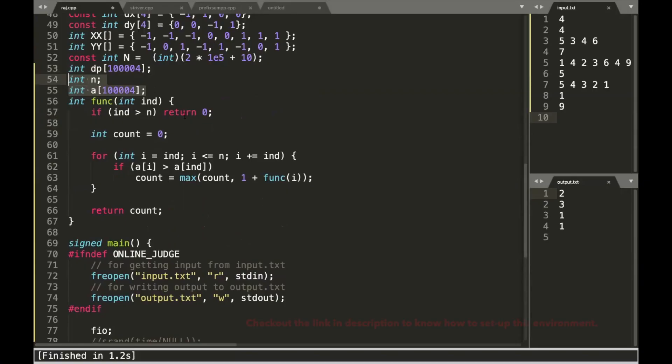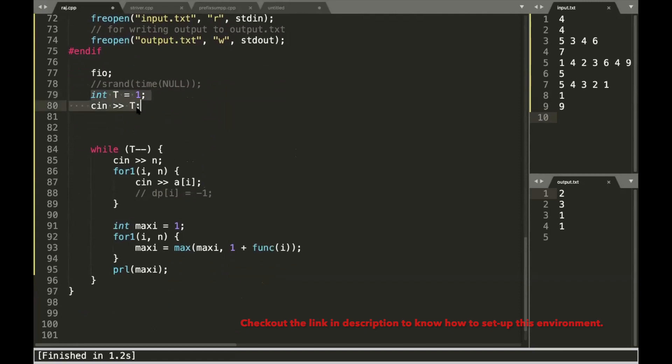So initially I've taken the n and a globally so that it's accessible to every other function part. For the moment, do not concentrate on the DP array. I run the loop for the test cases. I take the array as the input. I know the minimum answer of the subsequence is one itself. Because even if I do not form a proper subsequence, the minimum answer can be one, the element itself. So the maximum is one.